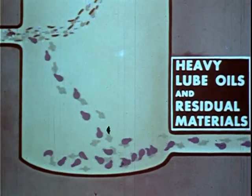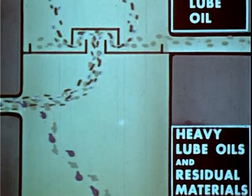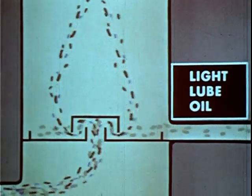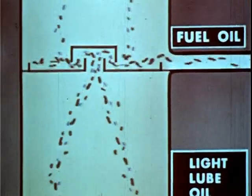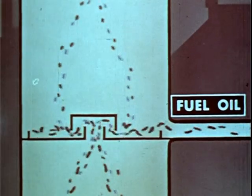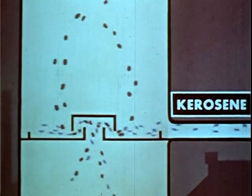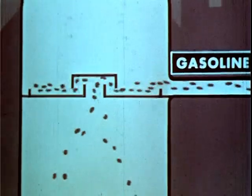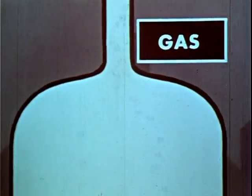Here we see the crude oil being heated — most of it is vaporized. At the bottom of the bubble tower, unvaporized large molecules of heavy lube oil and residual materials are drawn off. At the second level, the light lube oil is condensed out of the vapor and withdrawn. At the third level, the largest of the lighter remaining molecules condense to form the fuel oil cut. At the fourth level, kerosene is condensed and drawn off. At the fifth level, the gasoline molecules become liquid, leaving the very light gas molecules to go out the top of the bubble tower.